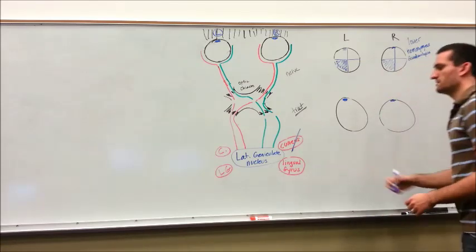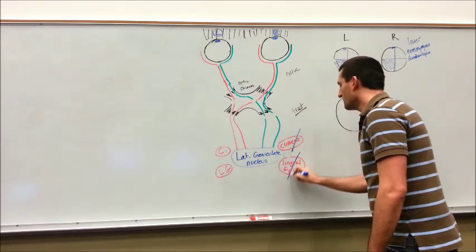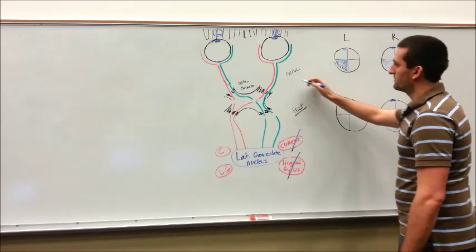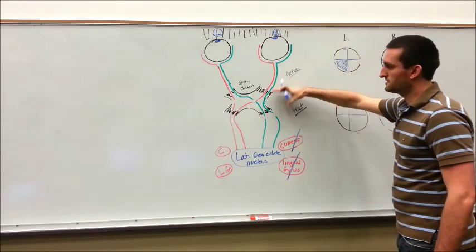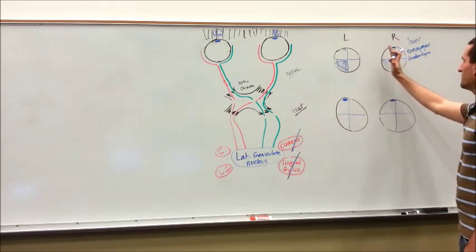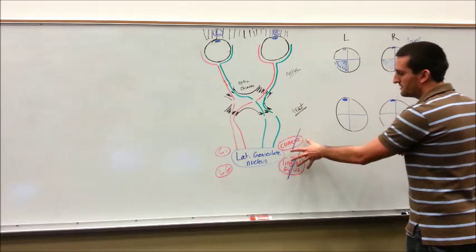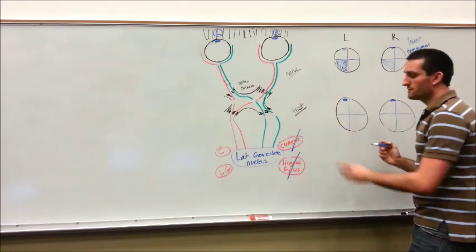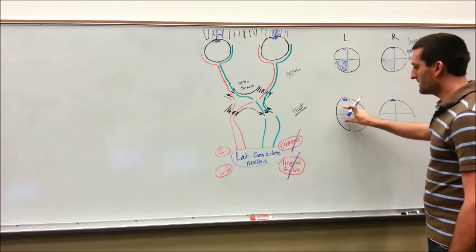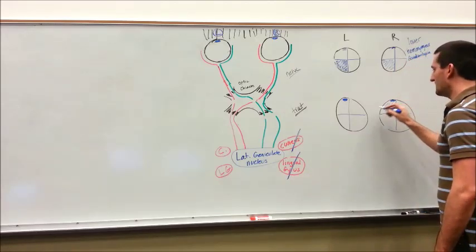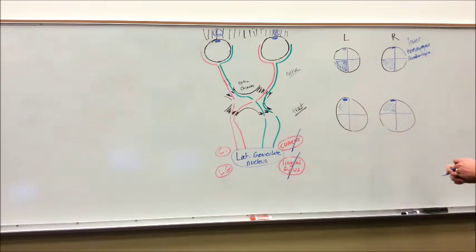Next, another lesion — using blue — is a lesion of the lingual gyrus on the right side. I'm going to quadrant it up again. When you have a lesion in the nerve, it's going to be the whole eye blind. When you have a lesion somewhere below the nerve but before the lateral geniculate nucleus, you're going to have hemianopia. And then when you have a lesion down here in the cortical tracts, you're going to have quadrantanopia. So for a lingual gyrus on the right side lesion — using the rule of opposites — we know it's going to be left-sided blindness. Since we have a lesion on the bottom part, it's going to be top-sided blindness. That is how a patient with upper homonymous quadrantanopia will present.